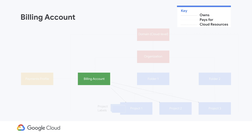Billing accounts are under the organization and track any charges for associated projects. A billing account has its own roles and permissions, so you can manage users for billing-related functions. Billing account users can associate projects and see spend, while billing account admins can additionally unlink projects, enable billing export, and set budgets. In addition, only billing account admins can contact billing support.